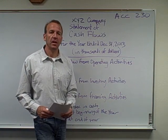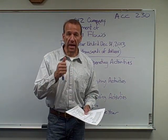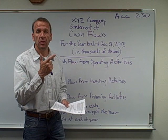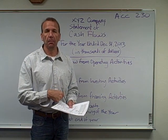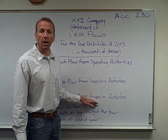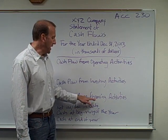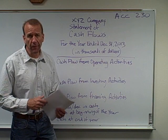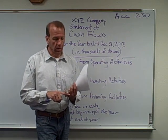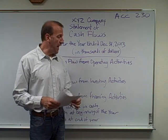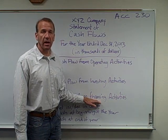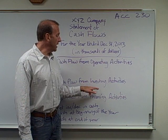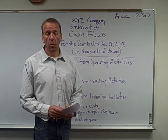The last section is cash flow from financing activities. We finance our company through liabilities — typically a bank or financing company — or through the owners investing in the company. Anytime owners make investments or we borrow money from the bank, that's a positive cash flow. If we're paying a loan off or paying dividends to the shareholders, that would be a reduction in cash. All three sections can have a positive or negative cash flow.